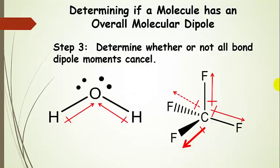The next step is to figure out whether all the bond dipole moments cancel. If they are 180 degrees opposed to each other, pointing in opposite directions, you can easily see those cancel. For a bent molecule like water, the bond dipoles do not cancel — they're both pointing up but at an angle and don't cancel each other out. Overall, water has a dipole moment because the bond dipoles on each side pointing toward oxygen are not equally opposed.